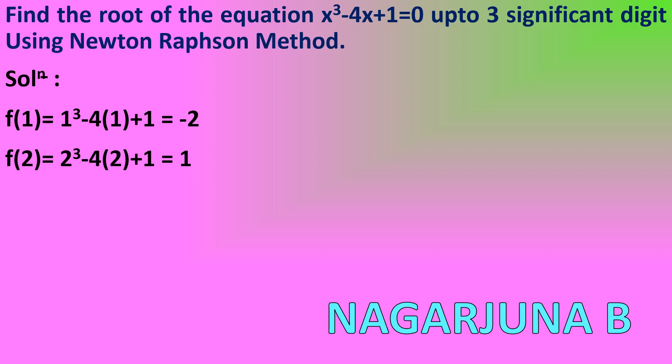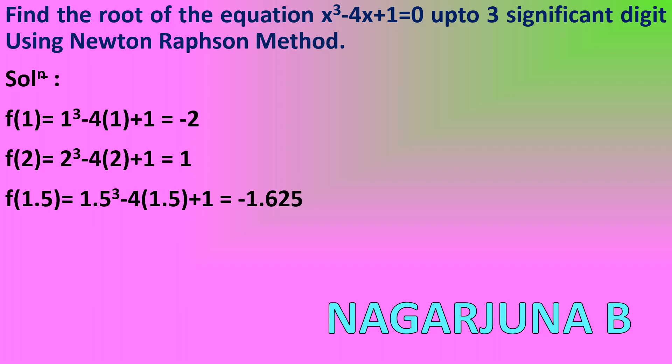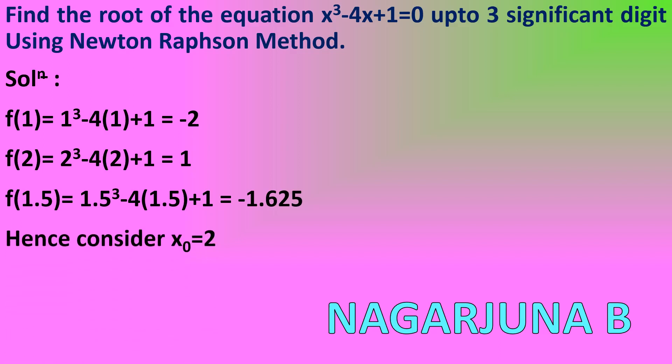I will consider f(1.5): f(1.5) = 1.5³ − 4(1.5) + 1 = −1.625. This is farther from 0 compared to f(2) = 1, meaning more iterations would be required if we use x = 1.5. Therefore, I will consider x₀ = 2.